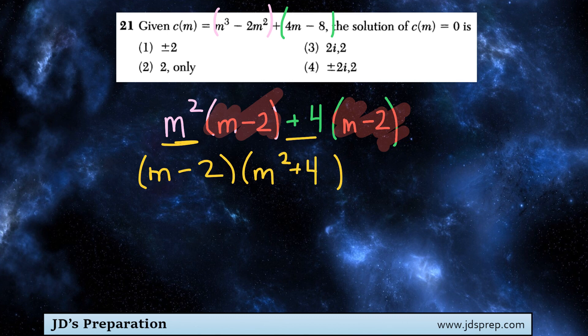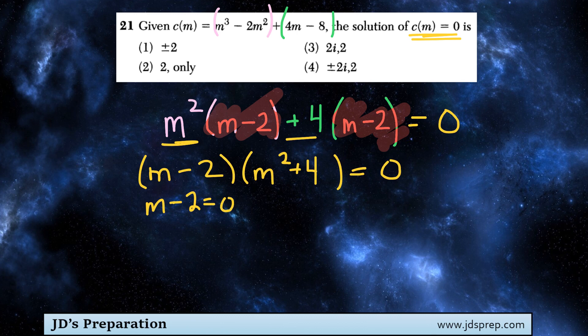Okay, so now to solve this, we are trying to find the solution of it being equal to 0. So we're going to set it equal to 0. And so that means m minus 2, if we set that equal to 0, we get a solution of m equals 2.